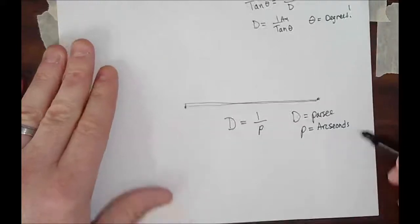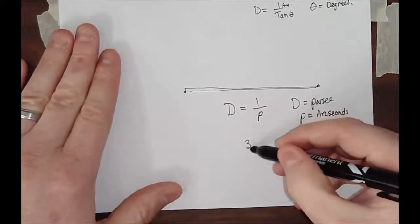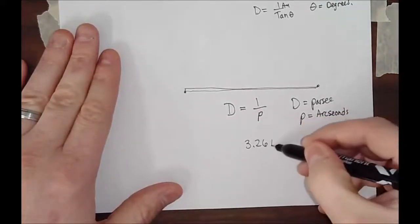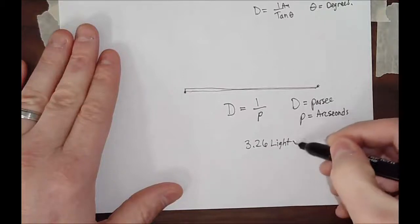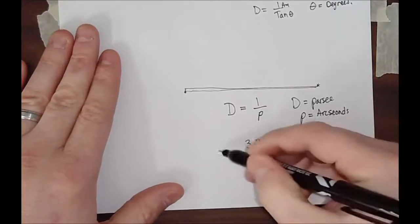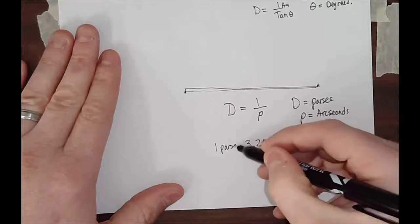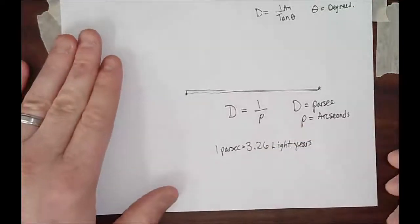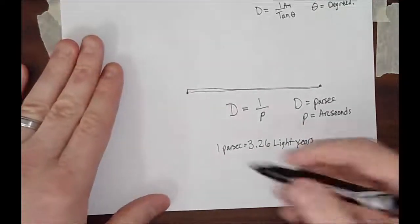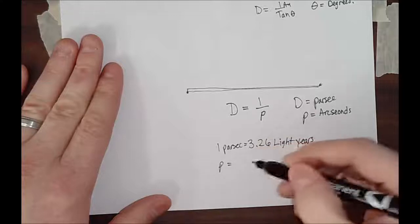Now, remember, a parsec is 3.26 light years. That is one parsec. Okay, so that's a very, very huge, huge number in a unit, where P is also going to be in arcseconds.